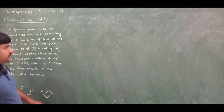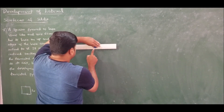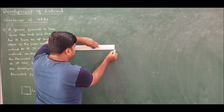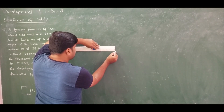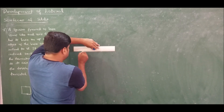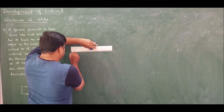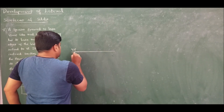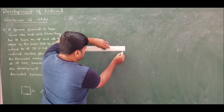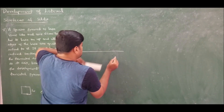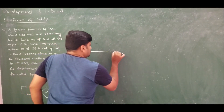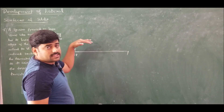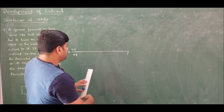First let me draw the front and top views of the given problem. Let us lay down the XY line and draw the front and top views. Above the XY line we have the vertical plane; below XY line we have the horizontal plane. For solids resting on HP, I should always draw the top view first.